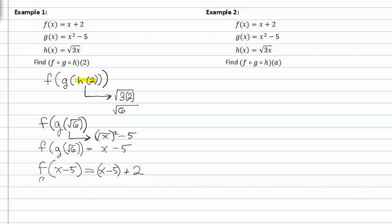So now I get f of x minus five is equal to x minus five plus two, or x minus three.